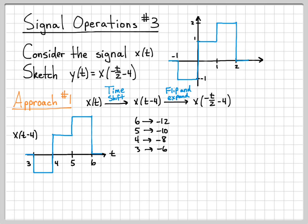That gives me reference points when I sketch this new time axis. What used to happen at 3 now happens at -6. What used to happen at 6 now happens at -12. Using that, I can get my new signal, and this is what it looks like. This is the final signal, x(-t/2 - 4).